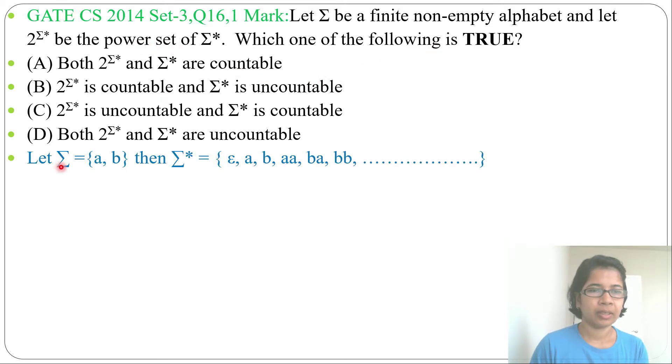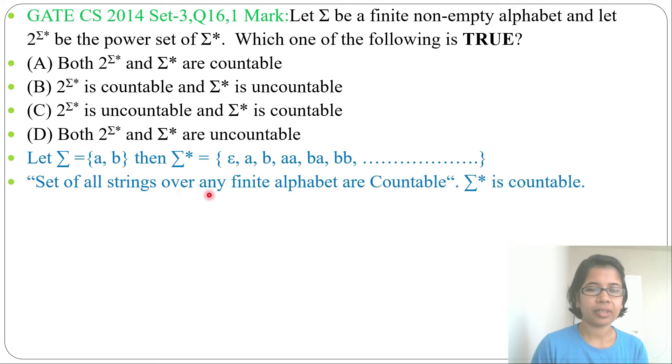Let sigma equal to {a, b}, then sigma Kleene closure will be all strings on a, b. That will contain every string, or you can say this is the universal language that will accept all strings on a, b, on alphabet. Set of all strings over any finite alphabet are countable.